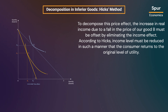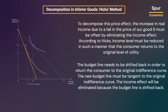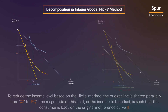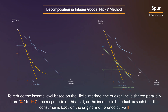To decompose this price effect, the increase in real income due to a fall in the price of good B must be offset by eliminating the income effect. According to Hicks, income level must be reduced in such a manner that the consumer returns to the original level of utility. The budget line needs to be shifted back to be tangent to the original indifference curve, eliminating the income effect. To reduce the income level based on the Hicks method, the budget line is shifted parallelly from XC to PQ. The magnitude of this shift is such that the consumer is back on the original indifference curve I1.